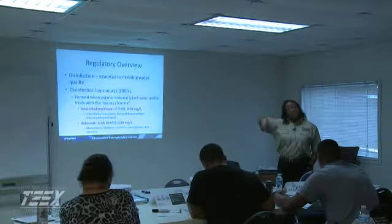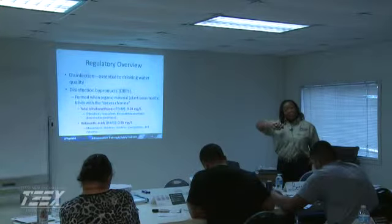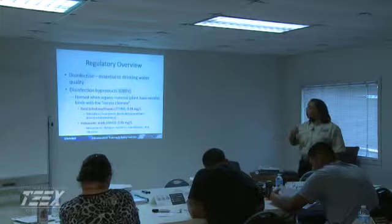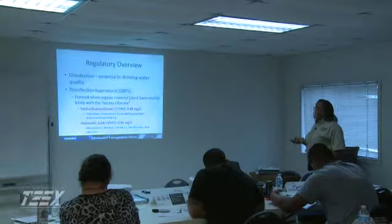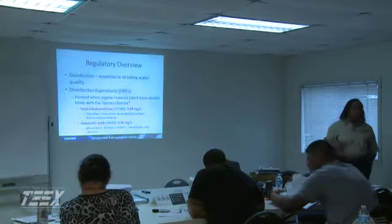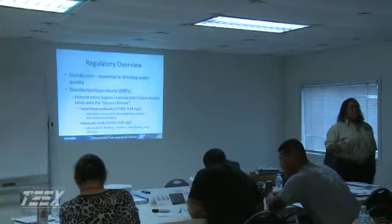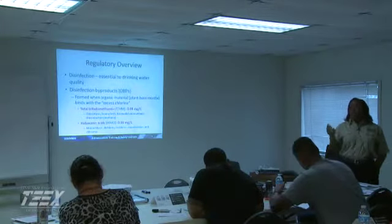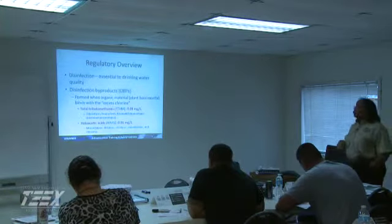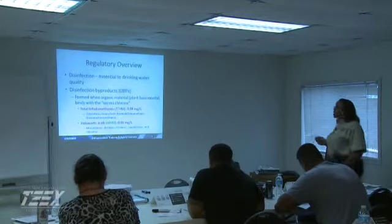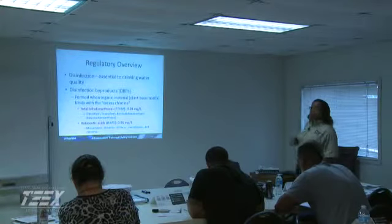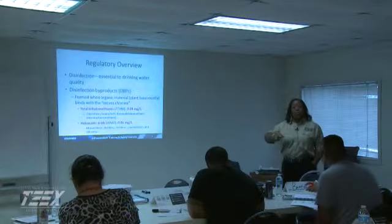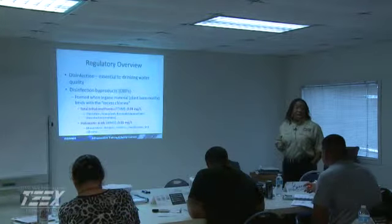EPA says that in no way should you ever exceed 0.08 milligrams per liter, or 80 parts per billion — that's your maximum contaminant level for all TTHMs combined. With haloacetic acids, again we're looking at a group of contaminants as a whole. When you're doing the analysis for these, it will be an average of the results that you get.